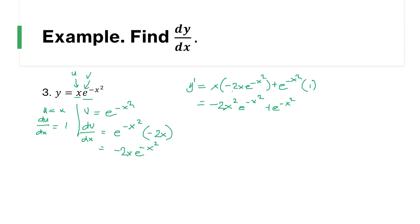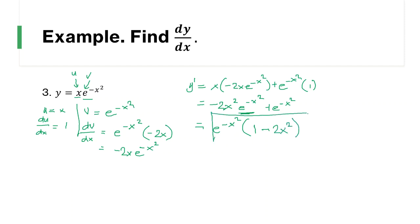Since there is a common term between the two expressions, we factor out e^(-x²). This gives us e^(-x²) · (1 - 2x²). This is our final answer.